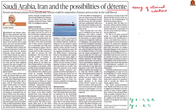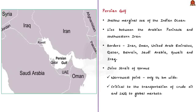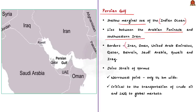The Persian Gulf is a shallow marginal area of the Indian Ocean lying between the Arabian Peninsula and southwestern Iran. As seen on the map, it borders several important Middle Eastern countries including Iran, Oman, UAE, Qatar, Bahrain, Saudi Arabia, Kuwait, and Iraq.